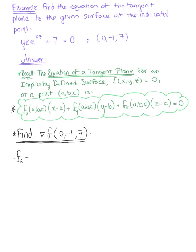The partial derivative with respect to x is going to be y times z squared times the natural exponential raised to xz. We have the partial derivative with respect to y, which leaves us with z times the natural exponential raised to xz.